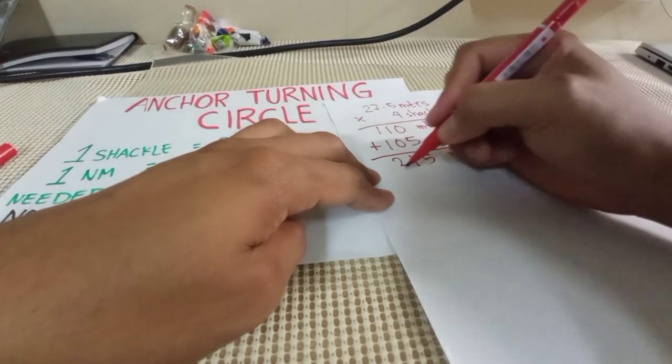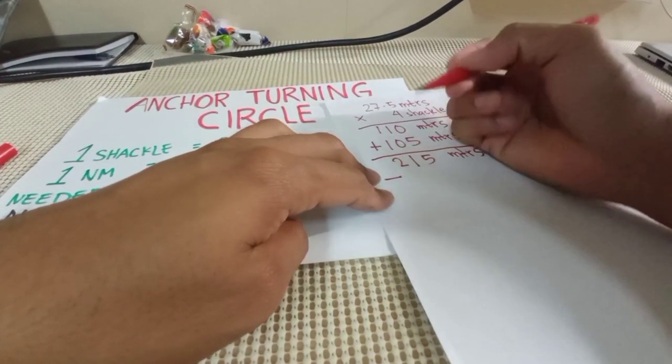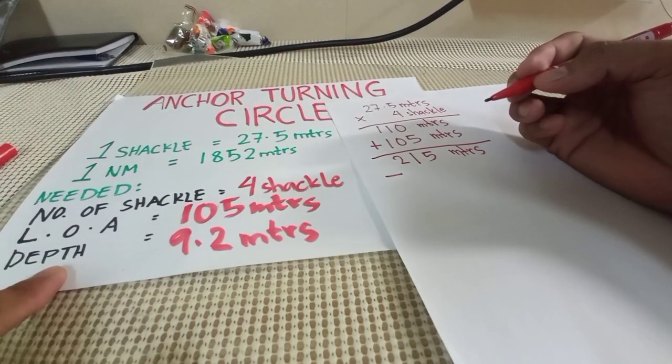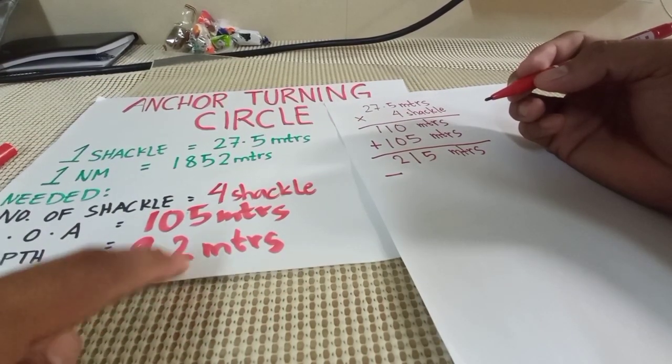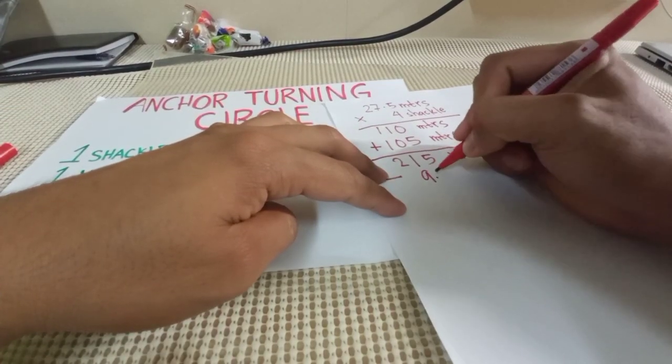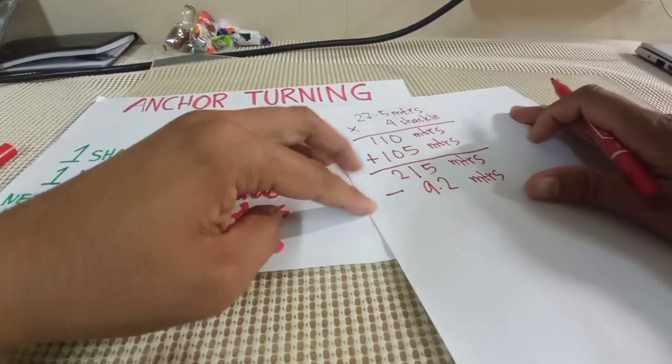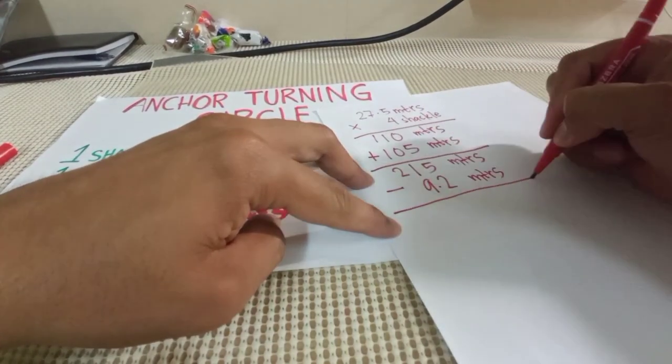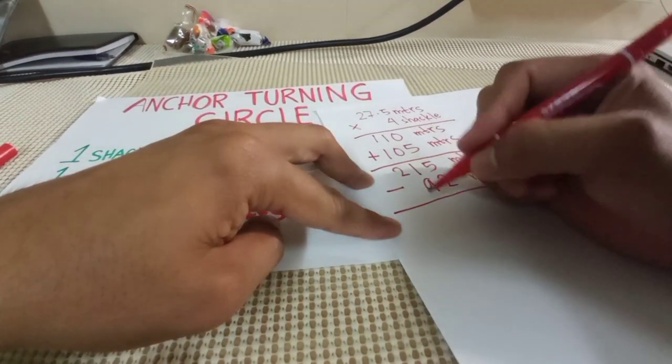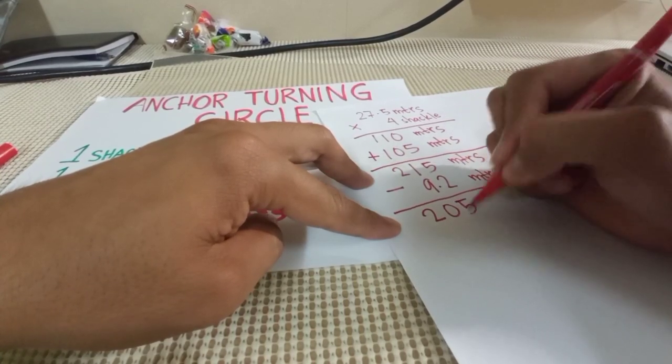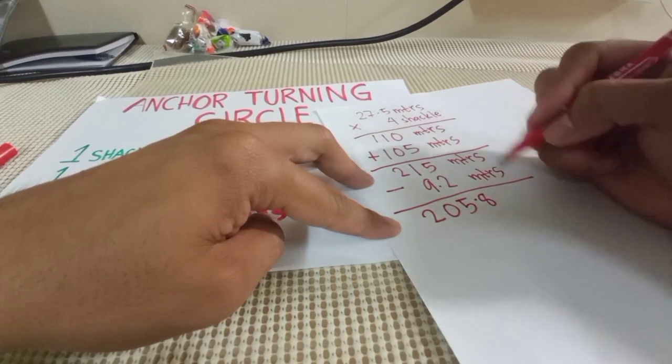Then next, we have to deduct or subtract the depth of the water. So our depth is 9.2 meters. And it's equal to 205.8 meters.